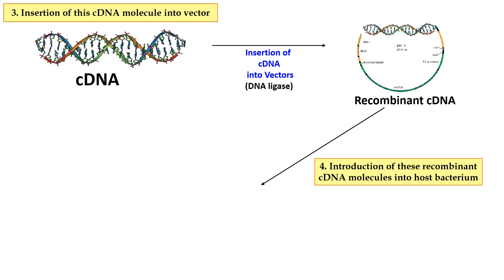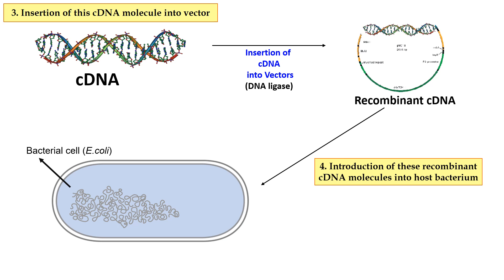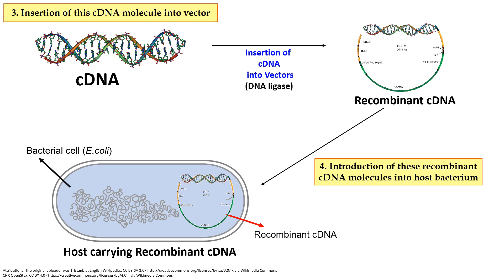Now in the next step, that is the fourth step, this recombinant cDNA molecule is transferred into the host cell, because you have to make the libraries of this host. This recombinant cDNA is introduced into or transferred into the host cell. For example, this is the bacterial cell which serves as the host cell. This recombinant cDNA is now transferred into the host cell. This is one host cell which contains a cDNA molecule. Similarly, you can make many host cells which contain different fragments of different cDNA molecules.